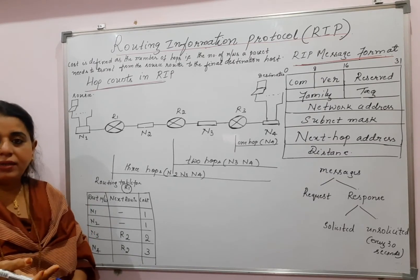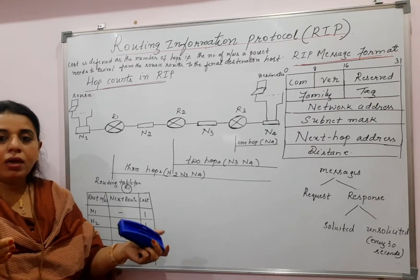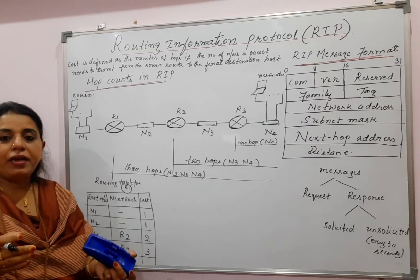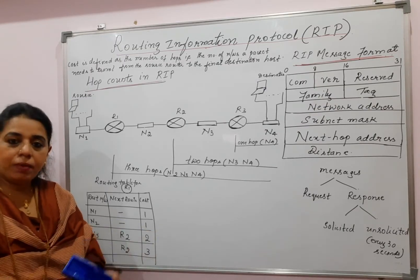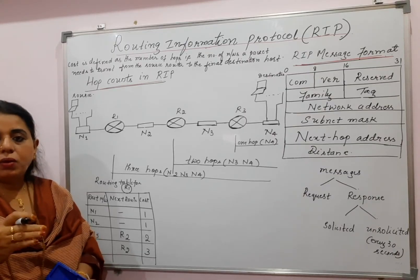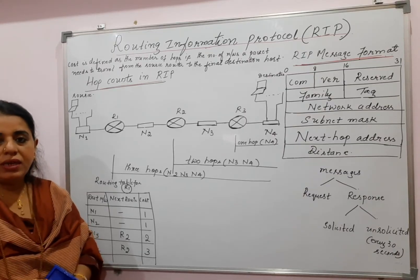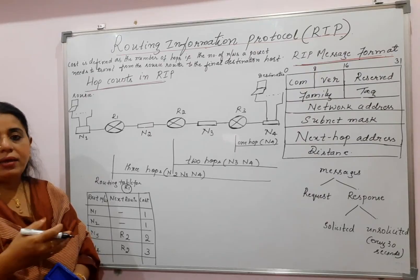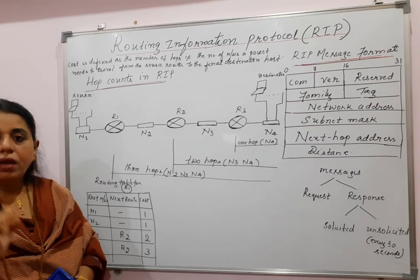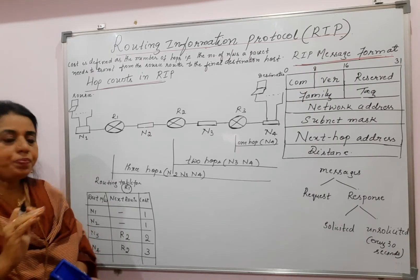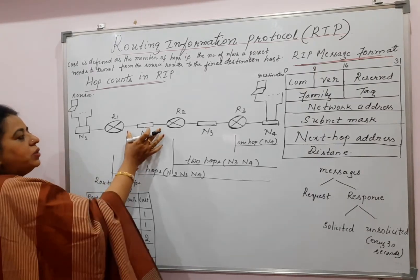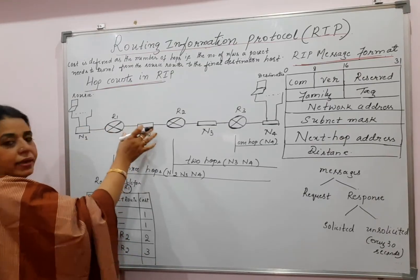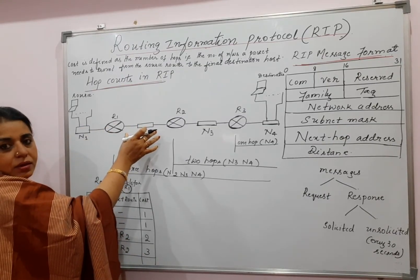This is very simple — the same thing you have learned in the distance vector routing algorithm. Here you are writing the actual router names, whereas earlier you used to write the vertex names because the given was a weighted graph, and the network was represented as a weighted graph. That is why you used letters A, B, C, D as vertices of the graph and on the edges was the cost. Now here the edge itself is the network — the LAN — and that is indicated in the diagram.